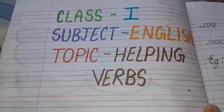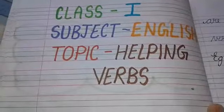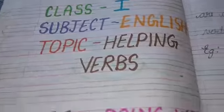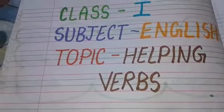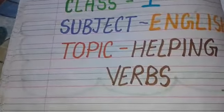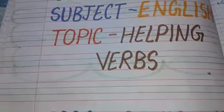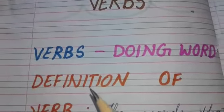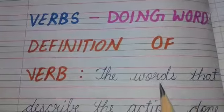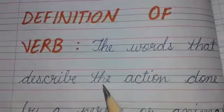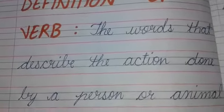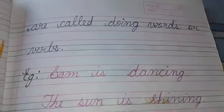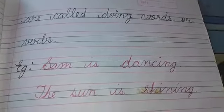Good morning students. Today we will study about the topic helping verbs. Hope you all are fine and doing well in your studies. So first tell me, what is a verb? Verb is doing words. Now we will see the definition of verb. The words that describe the action done by a person or animal are called doing words or verbs.